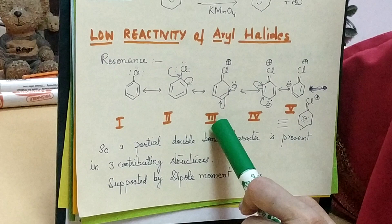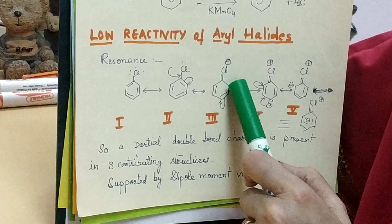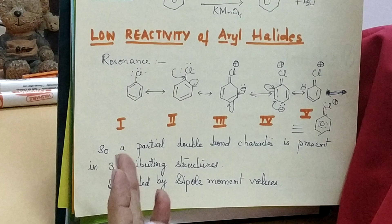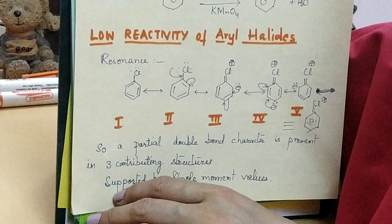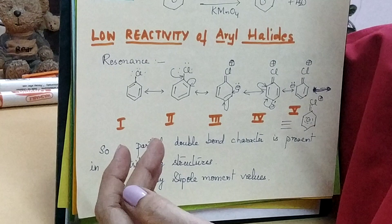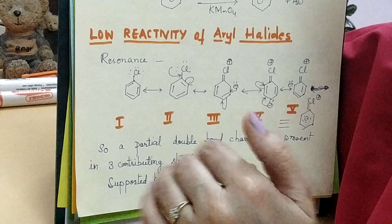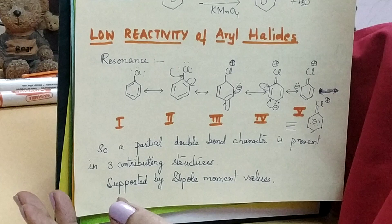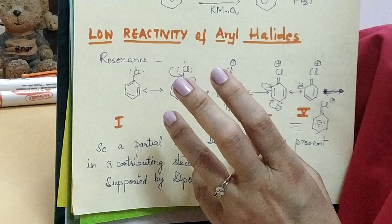Structures three, four, and five have a double bond between carbon and chlorine along with a positive charge on the chlorine atom. Aryl and alkyl halides show nucleophilic substitution because halogen is more electronegative, acquiring a slight negative charge due to bond polarization, and the positively charged carbon gets attacked by the nucleophile. That's how nucleophilic substitution reactions proceed.